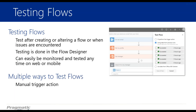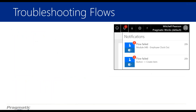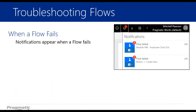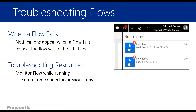You can test flows through a manual trigger. We have the option to perform the trigger action ourselves, use data from previous runs, or use data from a connector. For troubleshooting flows — whenever we do see a failure, we'll get a notification. We can inspect that flow within the edit pane and see exactly where that failure was. We can monitor the flow while running, which is helpful for seeing exactly what that failure is. Previous runs can be especially helpful if we know it worked at one point and then breaks after a change.